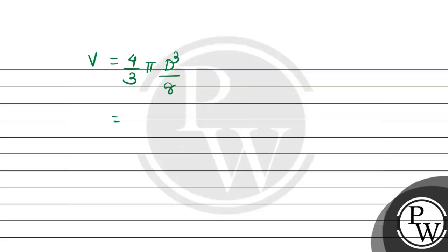Canceling out the terms, we get 1/6 π D³. This is the volume expression in terms of diameter.